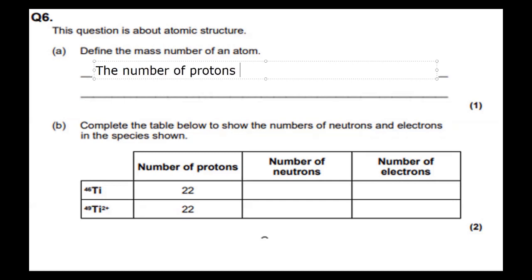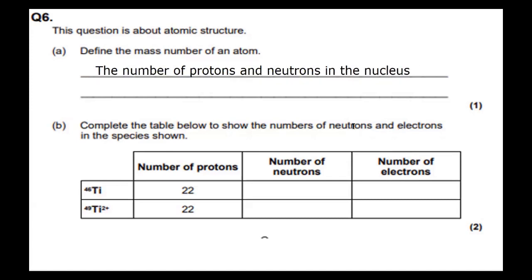Define the mass number of an atom. Well, we know that's the number of protons and neutrons in the nucleus. Nice and easy — one mark.